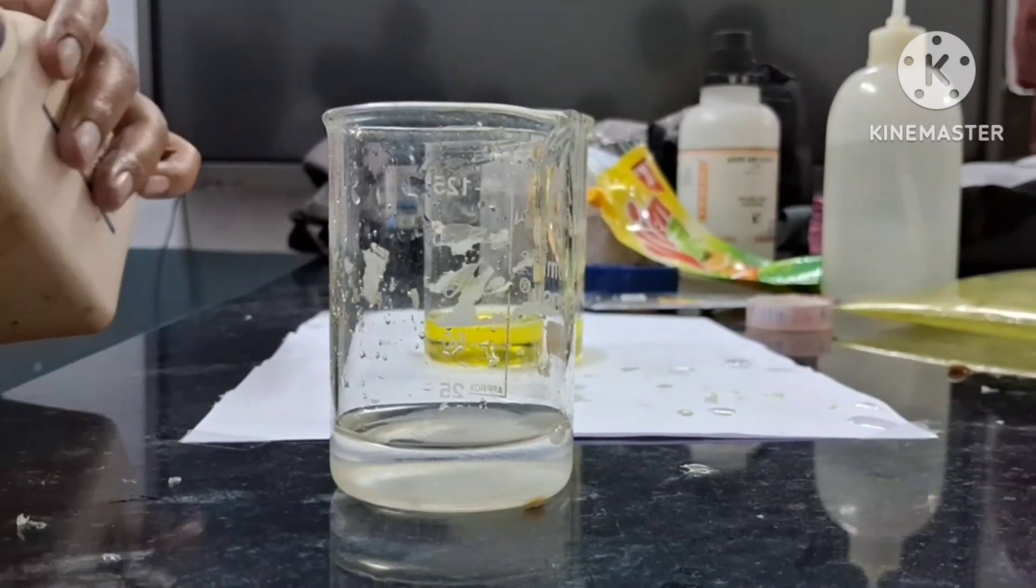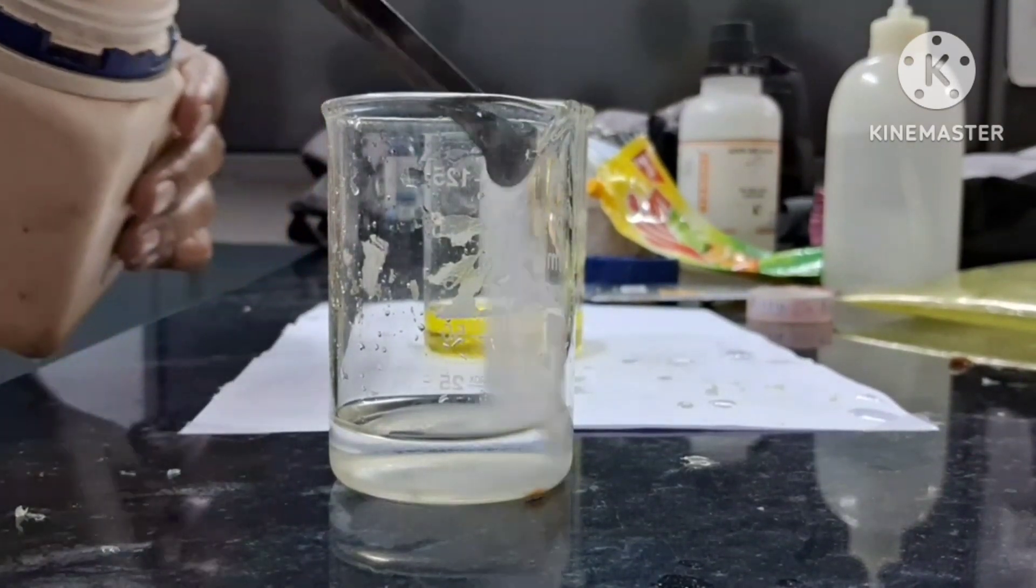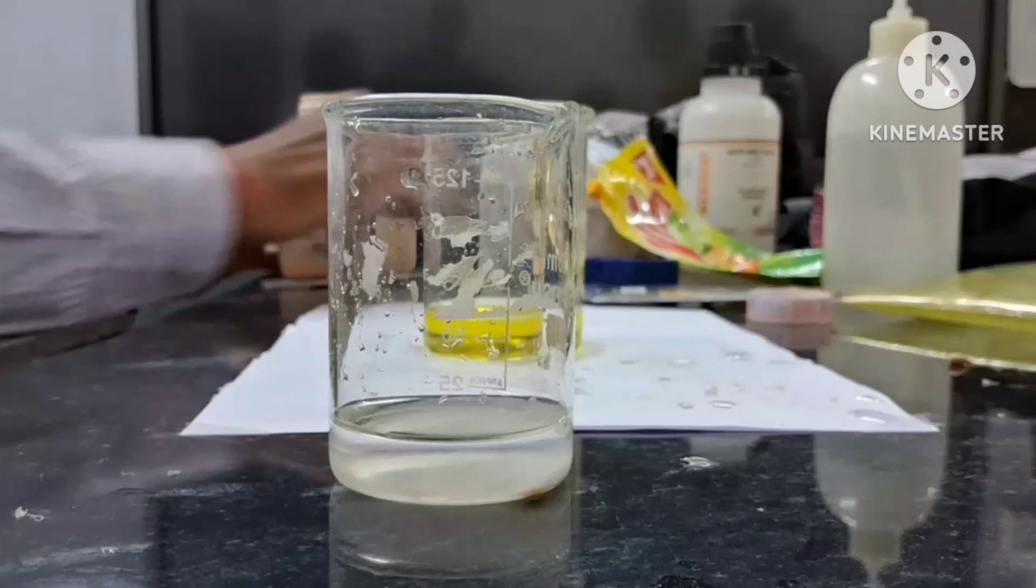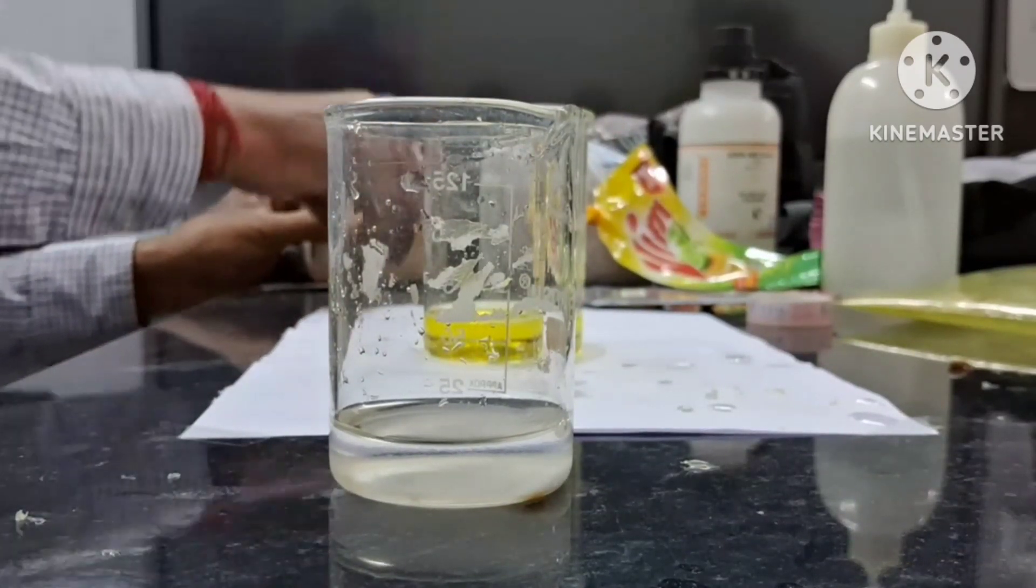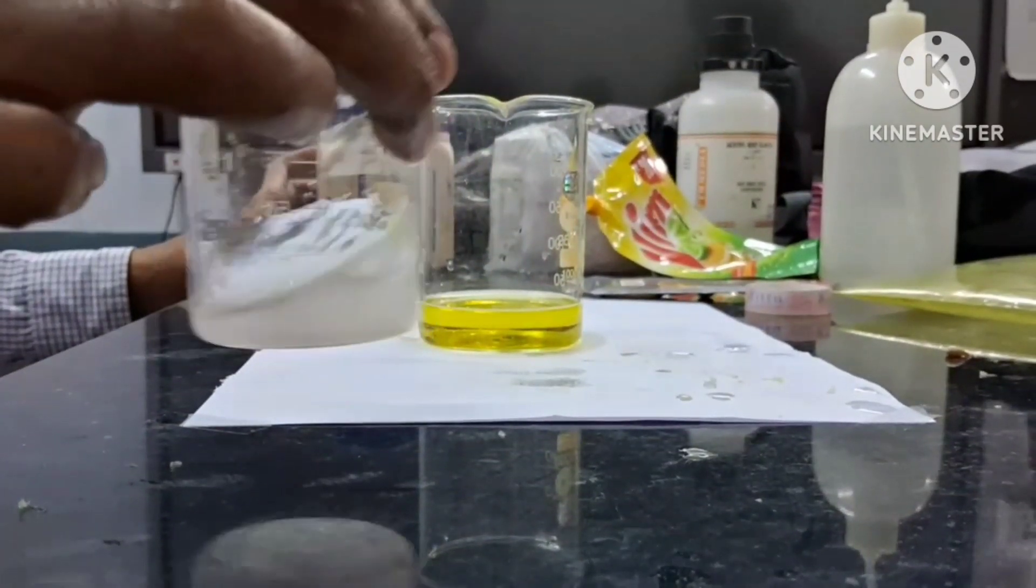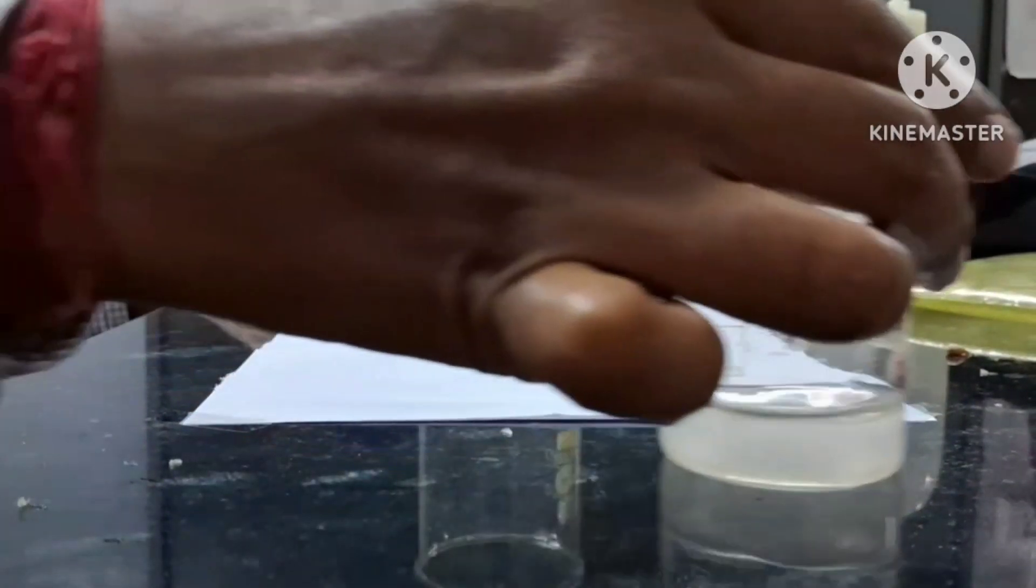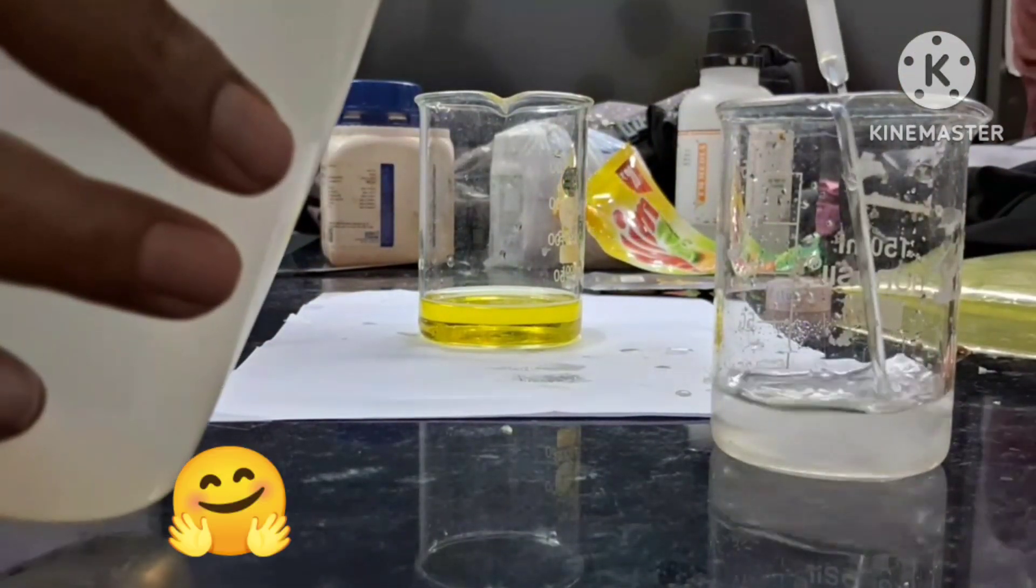Sodium bicarbonate upon reacting with acetic acid will liberate carbon dioxide gas rapidly, which will be trapped by the soap solution and will create foam, which we have referred to as the toothpaste, sarcastically.